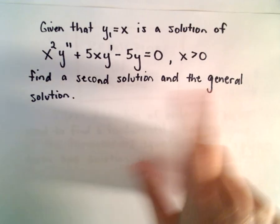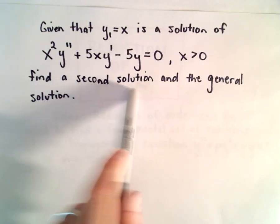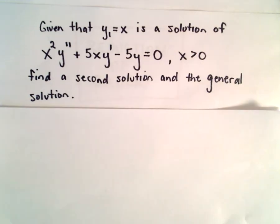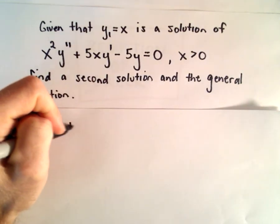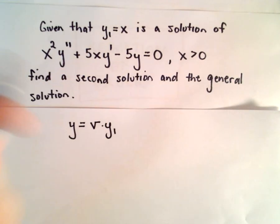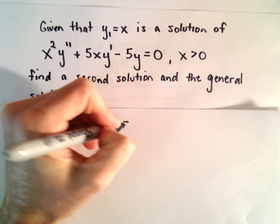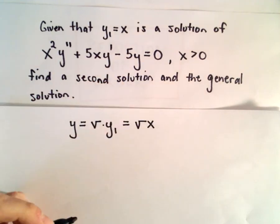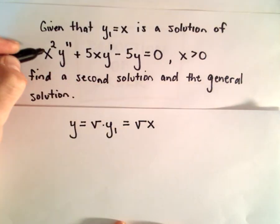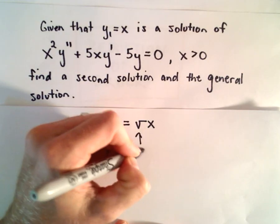The process is actually going to pick out the general solution, and once we have the general solution, we'll also be able to identify the second solution. The idea is we look for solutions of the form y equals v times y sub 1, whatever our known solution is. So in that case we're just going to get v times x, where v is some unknown function of x.